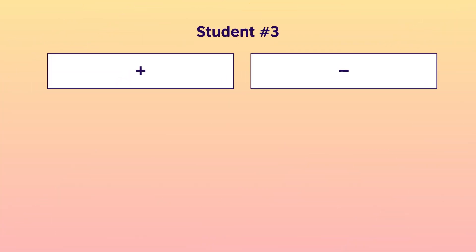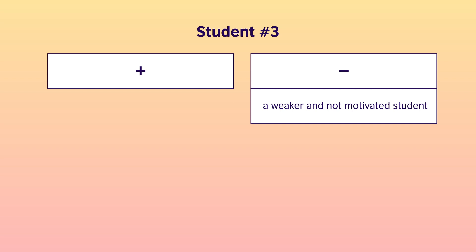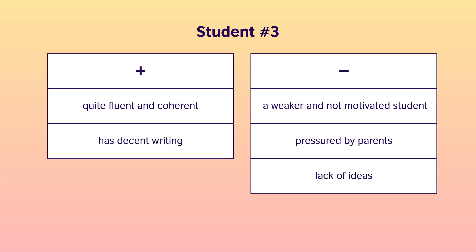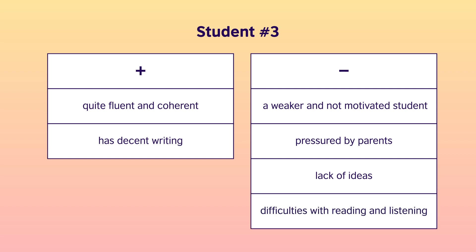Our third and final student, and it is a tough one. Not only is she a weaker student, but she is also not motivated at all. She says her parents are making her prepare for the exam and she doesn't even want to take it and doesn't see the need. In terms of skills, she is pretty fluent and coherent. Her writing is decent, but she has trouble coming up with ideas. There are difficulties both with reading and listening, so overall things are not looking well. What can you do to help? Once again, write your ideas down.